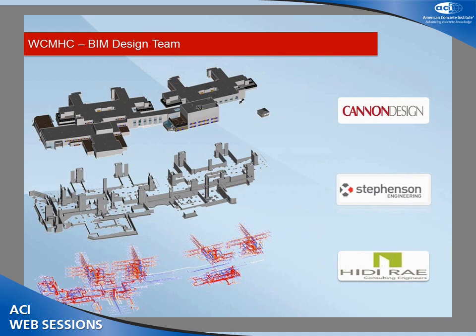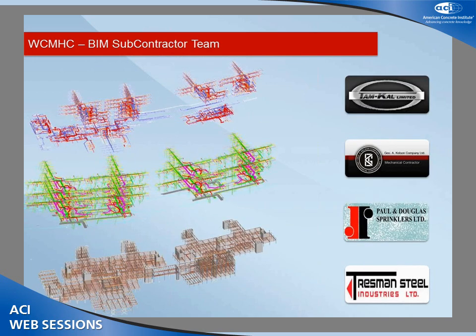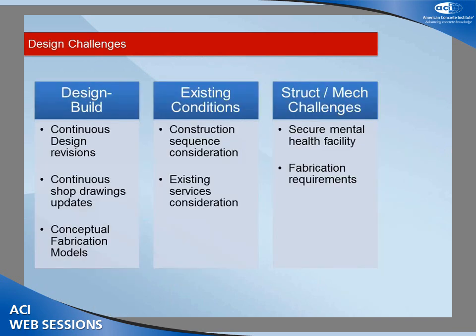Some of the companies involved with the project: Cannon Design developed all the architectural systems and content. Stevenson Engineering did the structural content and Edie Ray did the mechanical — each produced models at the design stage illustrating design intent, constantly updated through the design process. Once those systems got locked down, the subcontractors started developing their content. Temcal did all the sheet metal and ductwork; Kelsey Mechanical did all the piping; Paul and Douglas did their sprinklers in 3D; and Trustman did the structural steel. For the most part, all design-stage content was produced in Revit, but when moving into construction each subcontractor works in a different software. The challenge is getting all these software systems to talk to each other, so we need to set up an execution plan early and make sure everyone plays nice together in 3D.